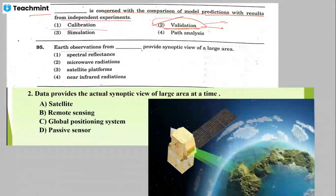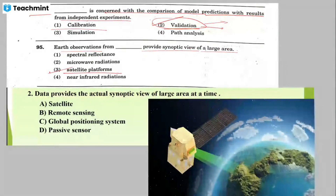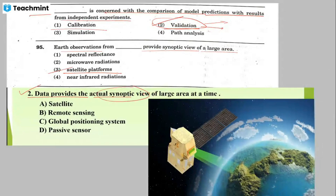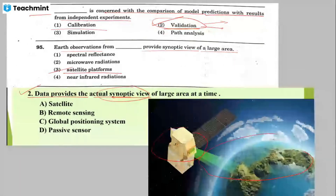Earth observation from blank provides a synoptic view of a large area. Option number 3 — satellite platform — is the correct answer. The question and answer are confirmed correct.